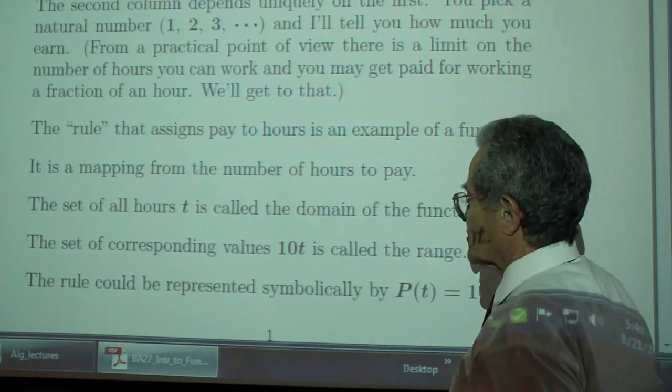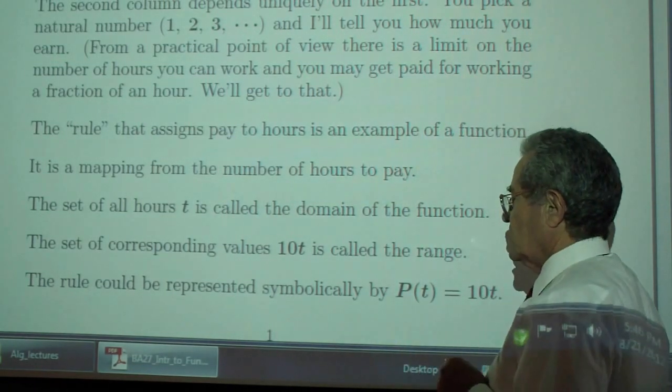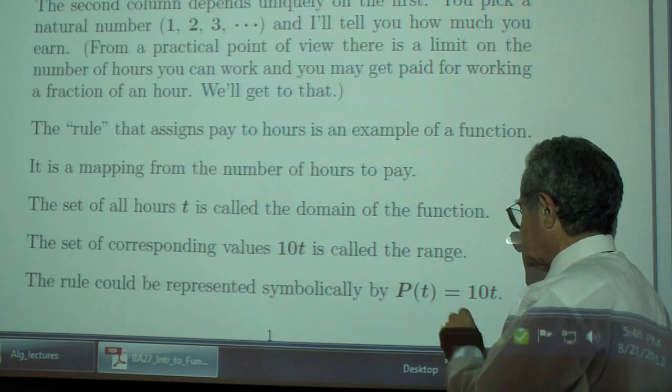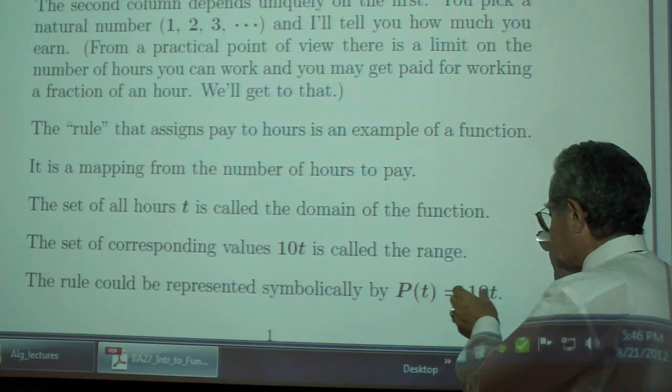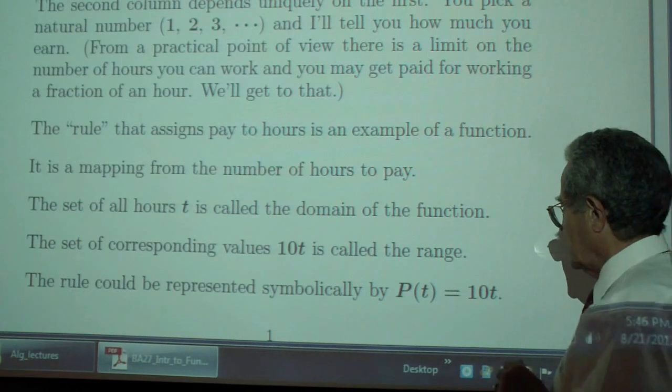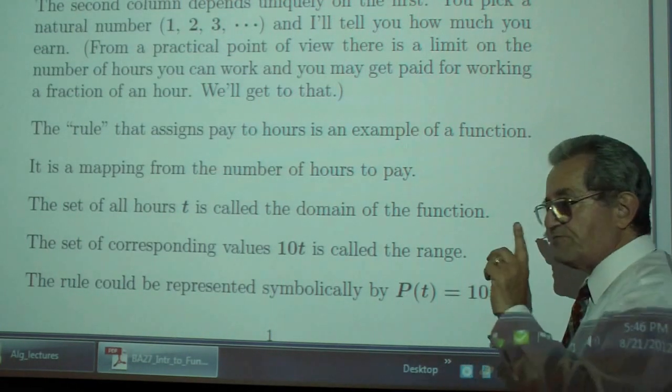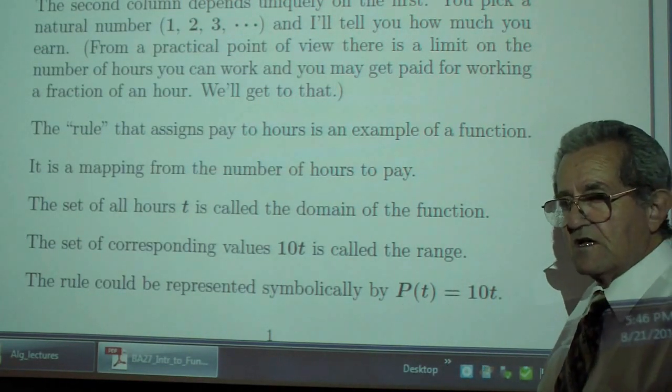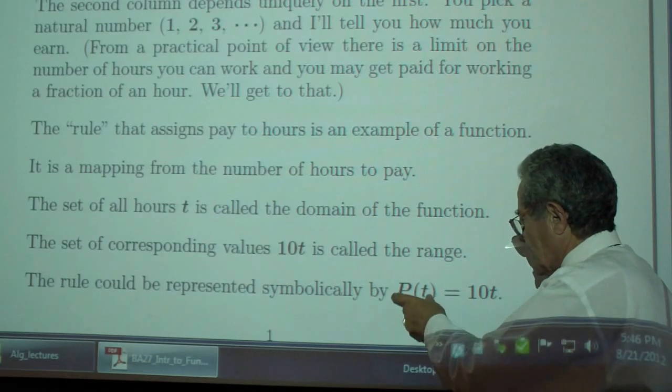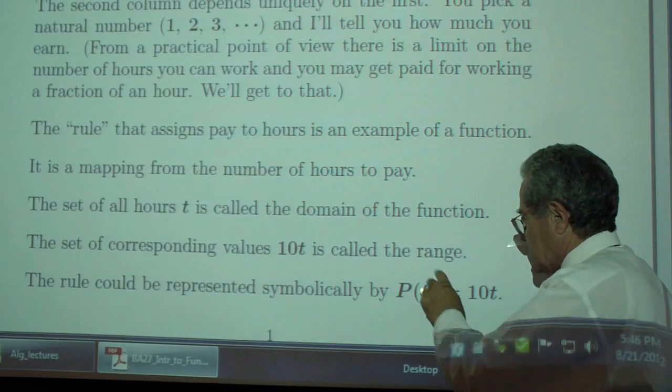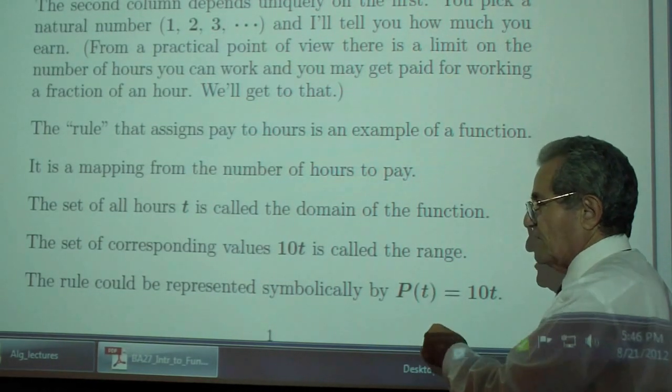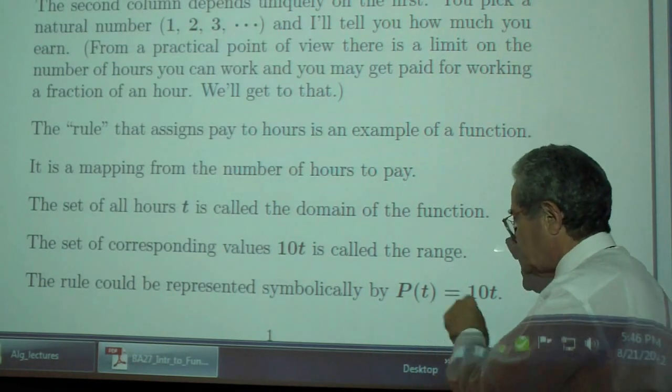So the second column, the column on the right, is the range. The rule could be represented symbolically by P of T, which is 10 times T. Now be careful. P of T, not P times T. So when you have a function, functional notation, F of T, all of this belongs together. And you don't multiply P by T.